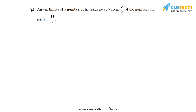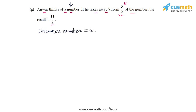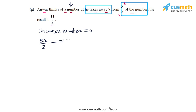Part g says: Anwar thinks of a number. If he takes away 7 from 5/2 of the number, the result is 11/2. Let the unknown number be x. Five halves of x is 5x by 2. Taking away 7 from that gives 5x by 2 minus 7, and we are told this equals 11 by 2.